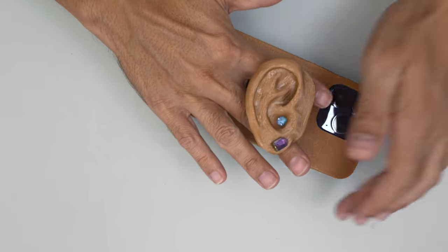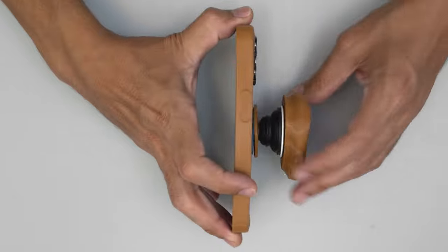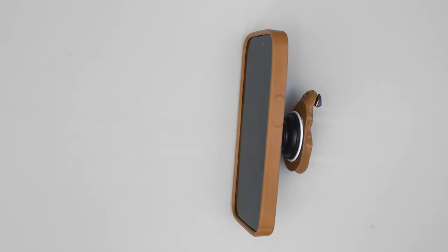Pop sockets allow you to rotate your phone while holding on to it and it doubles as a kickstand. The ear add-on can be attached using your favorite adhesive like double-sided tape.